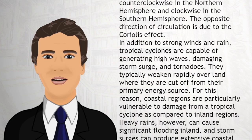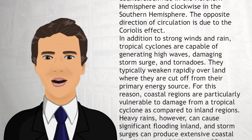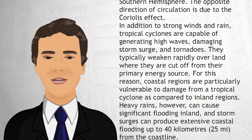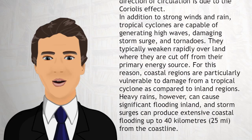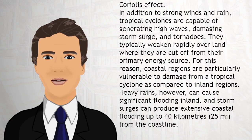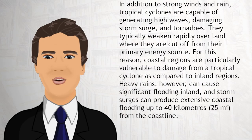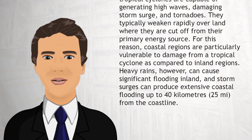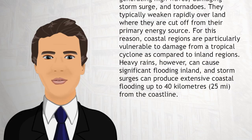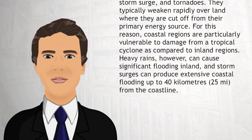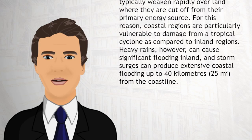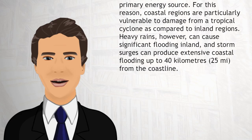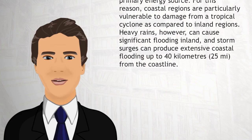In addition to strong winds and rain, tropical cyclones are capable of generating high waves, damaging storm surge, and tornadoes. They typically weaken rapidly over land where they are cut off from their primary energy source. For this reason, coastal regions are particularly vulnerable to damage from a tropical cyclone as compared to inland regions.